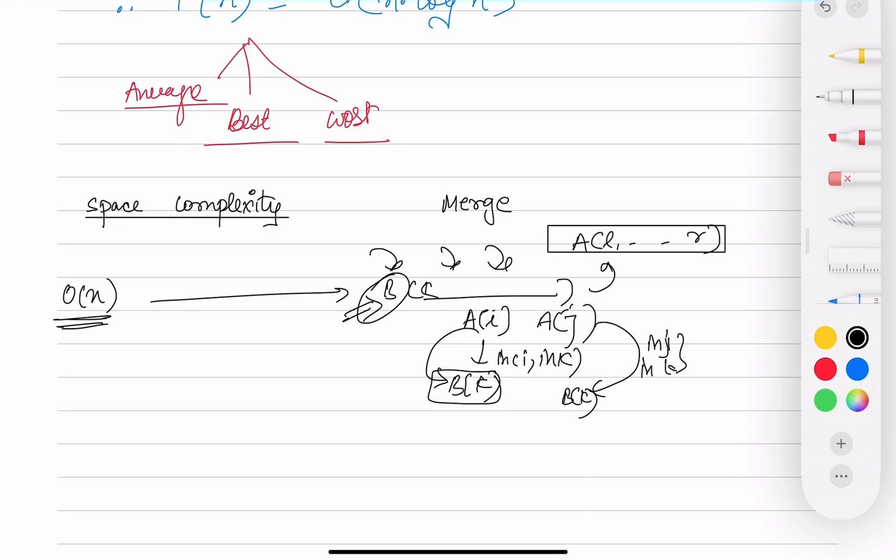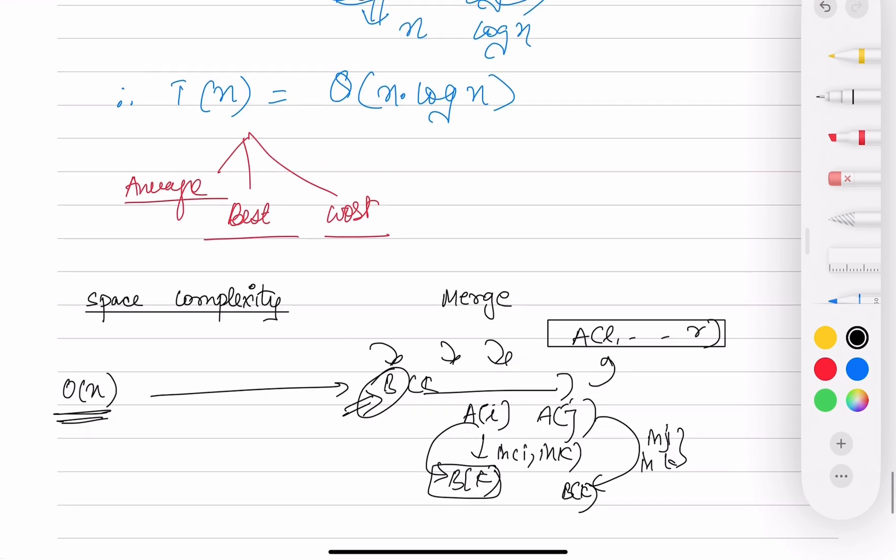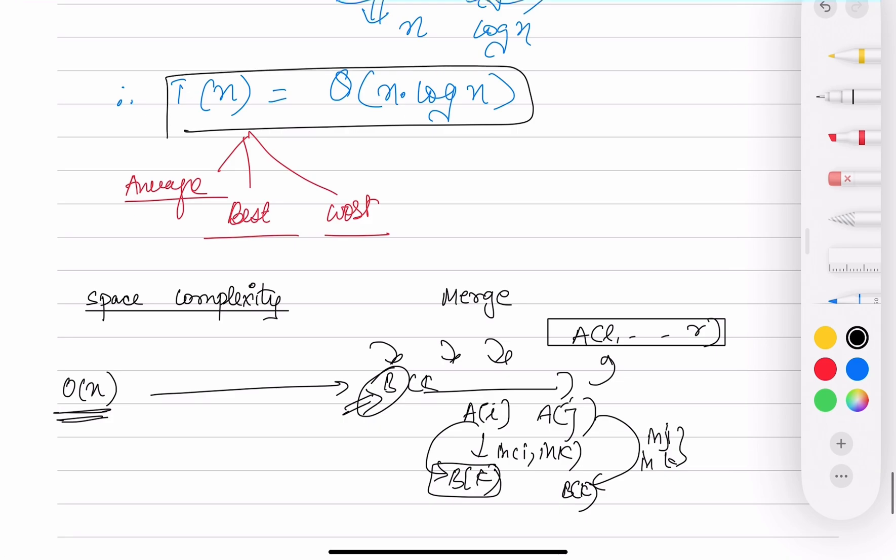So time complexity of merge sort is n log n and space complexity is O(n). If you like this video please do like, share and subscribe. Thank you.